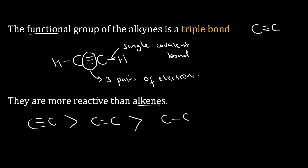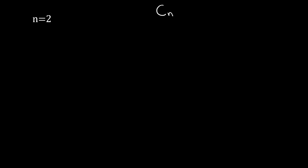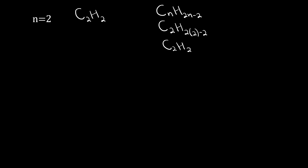Now let's look at n equal to two. We substitute into our general formula for alkynes, which is CₙH₂ₙ₋₂. If n equals two, we get C₂H₂ₓ₂₋₂, which gives C₂H₂. So our first alkyne has the molecular formula C₂H₂.